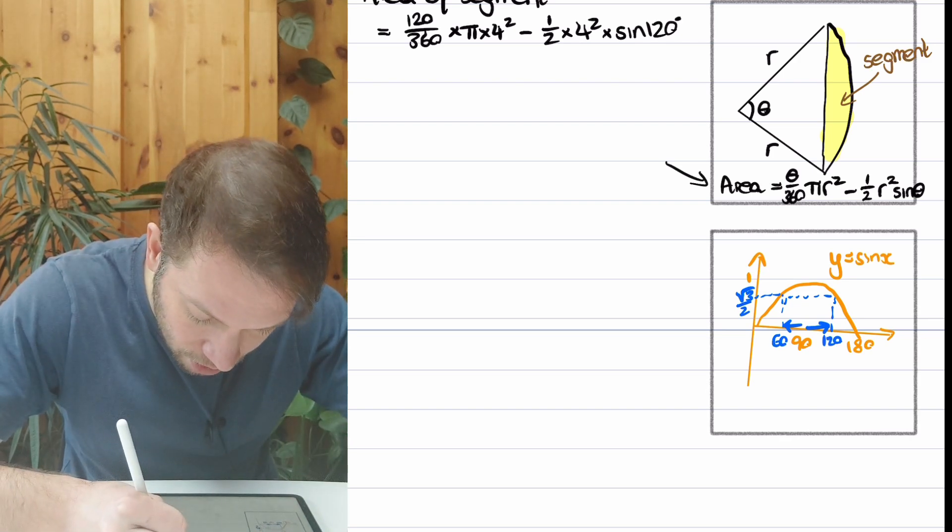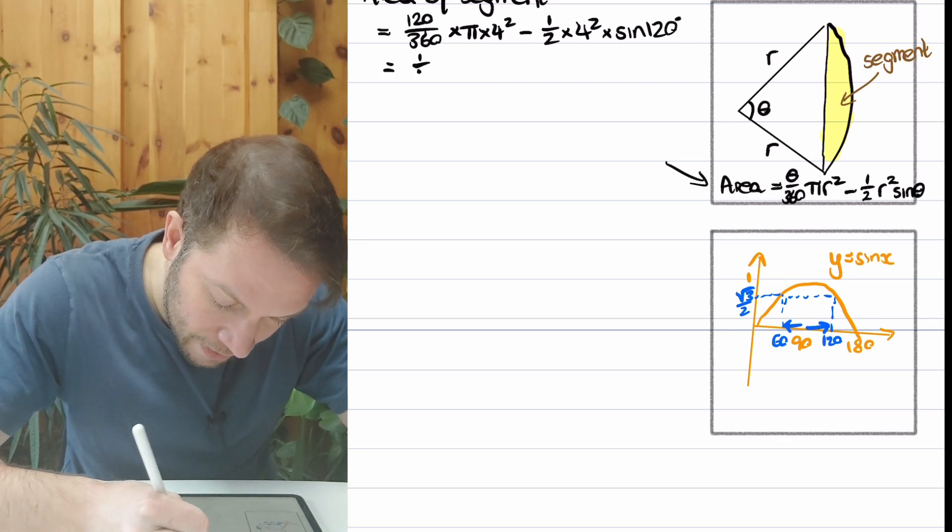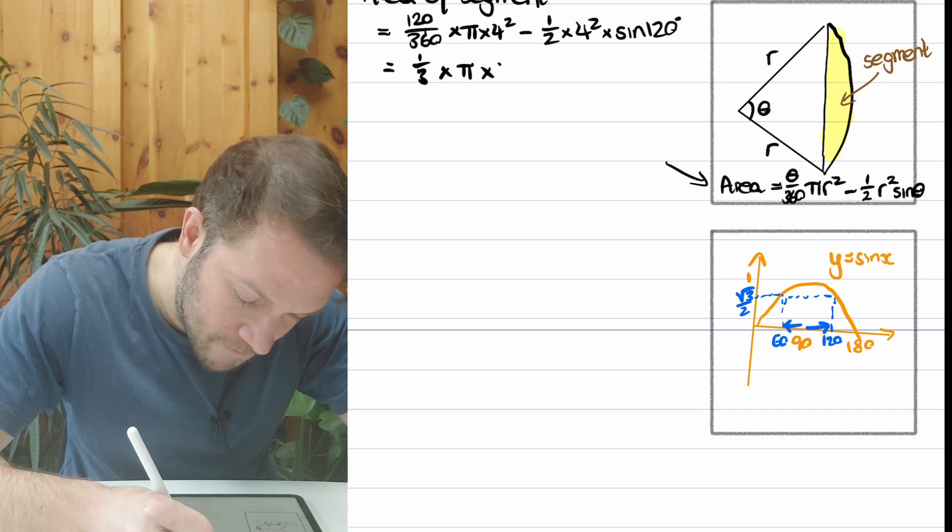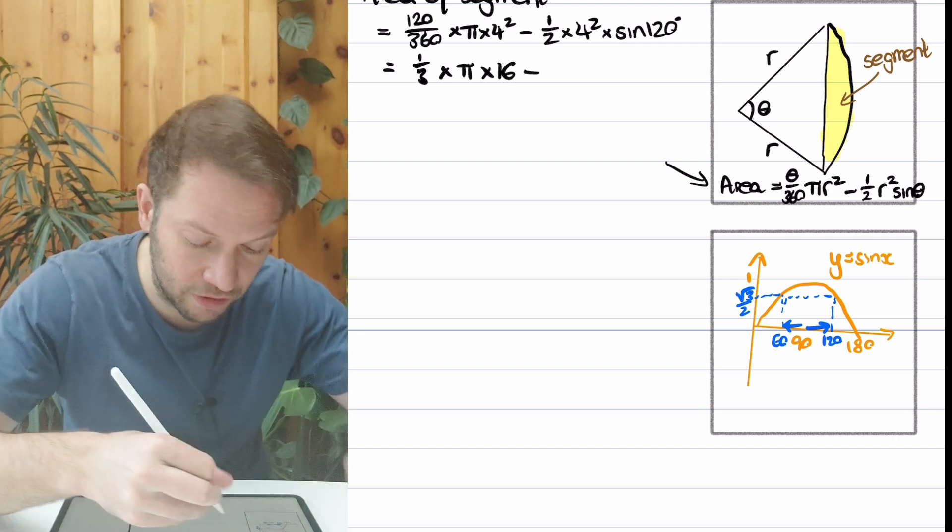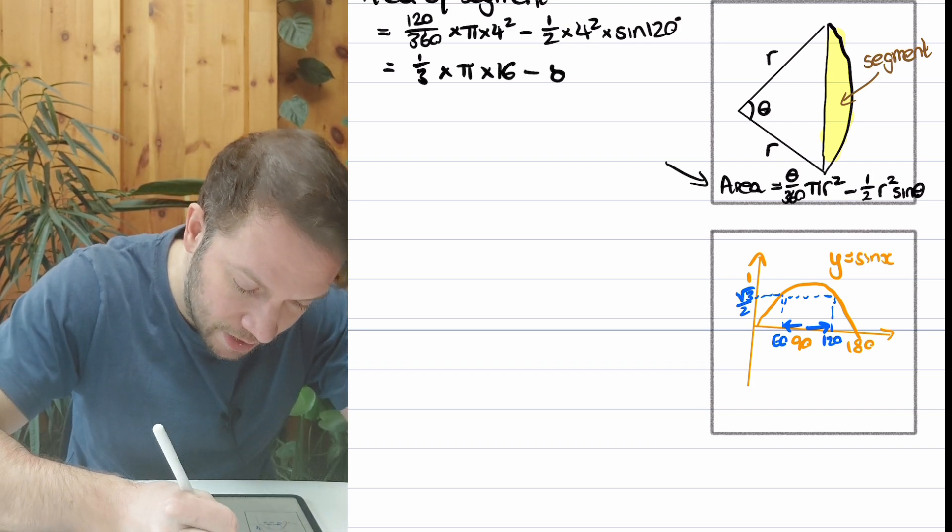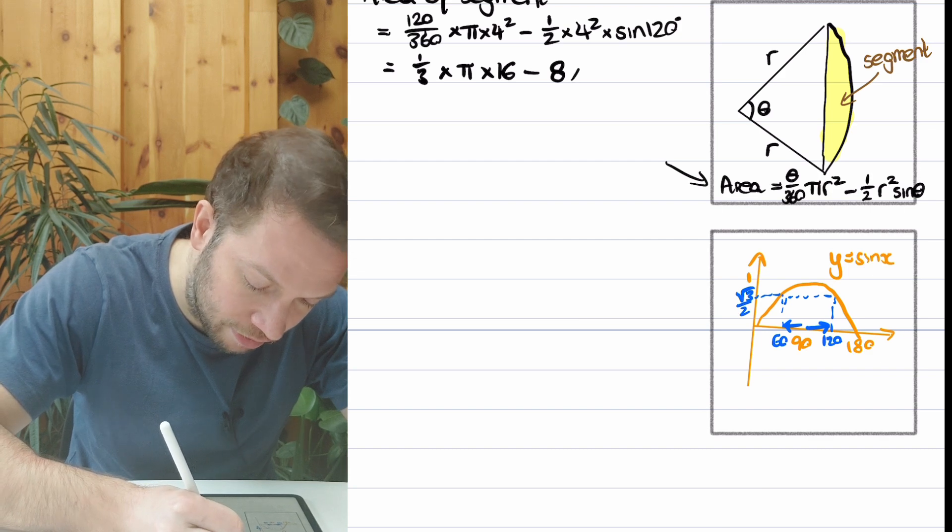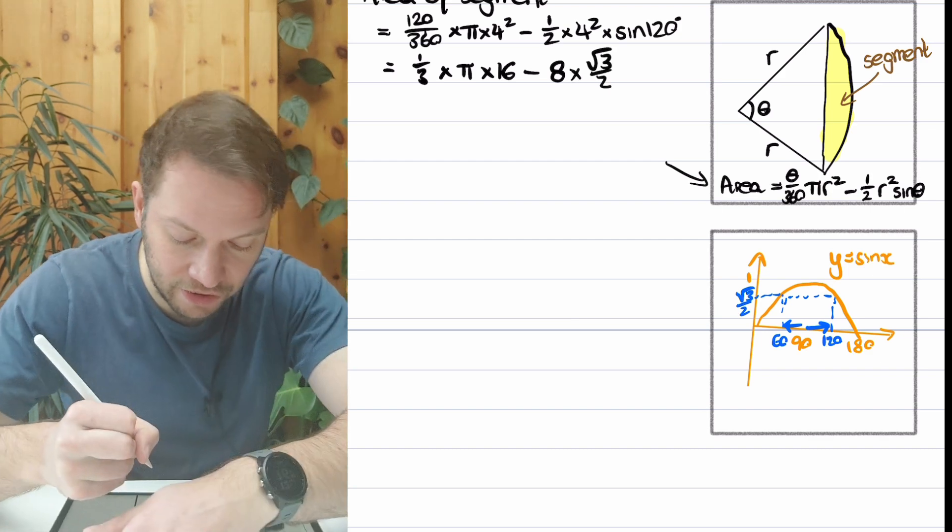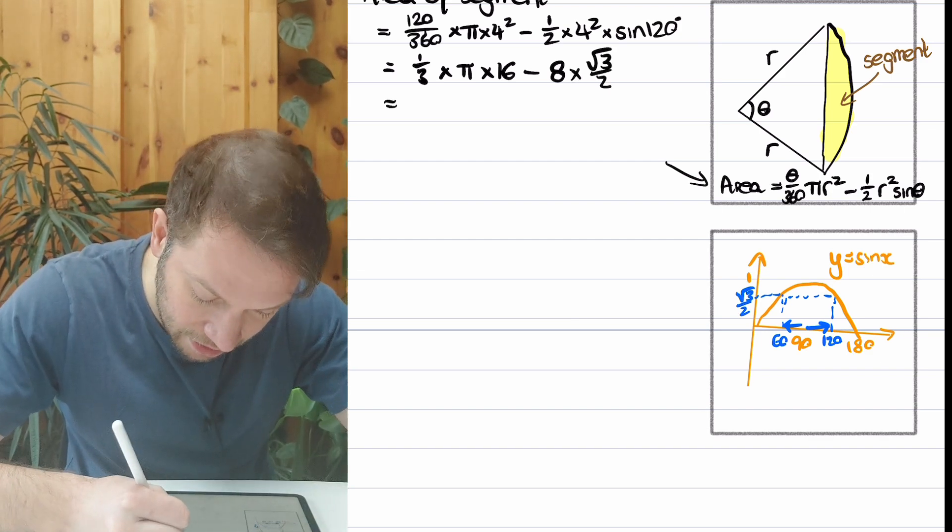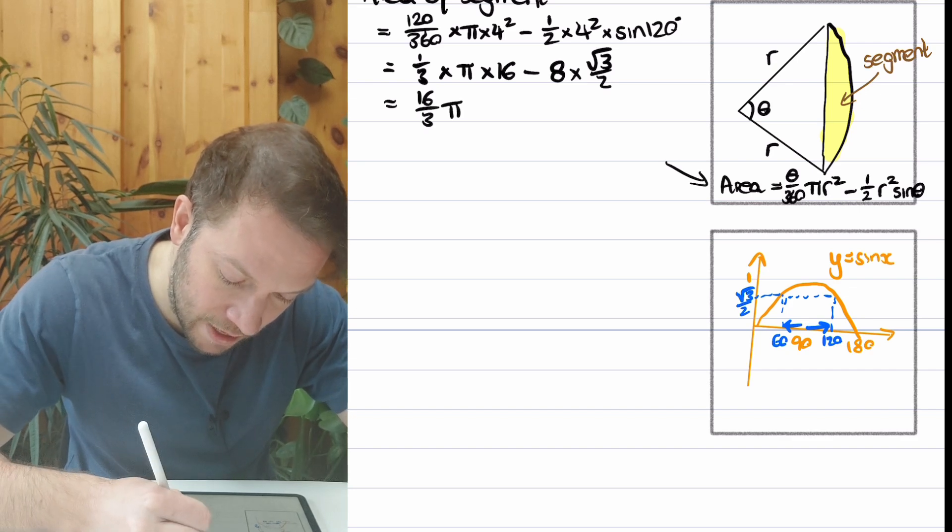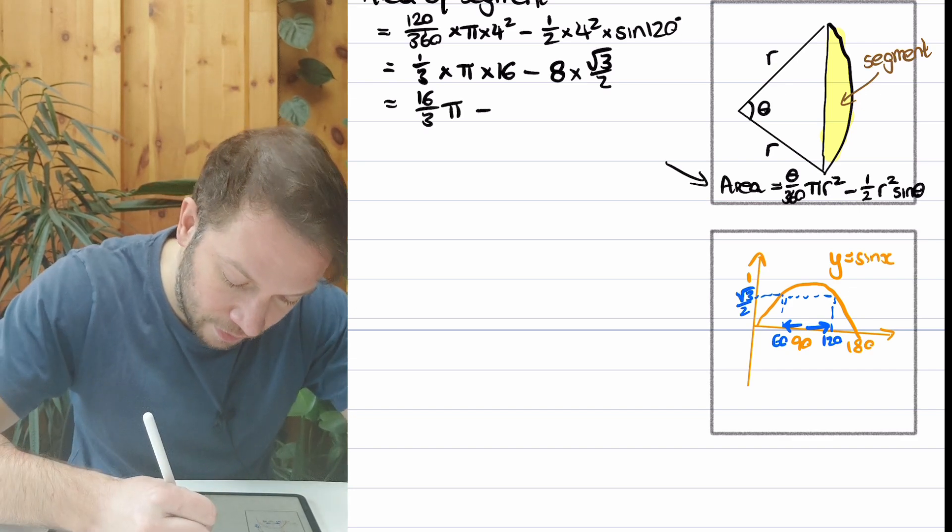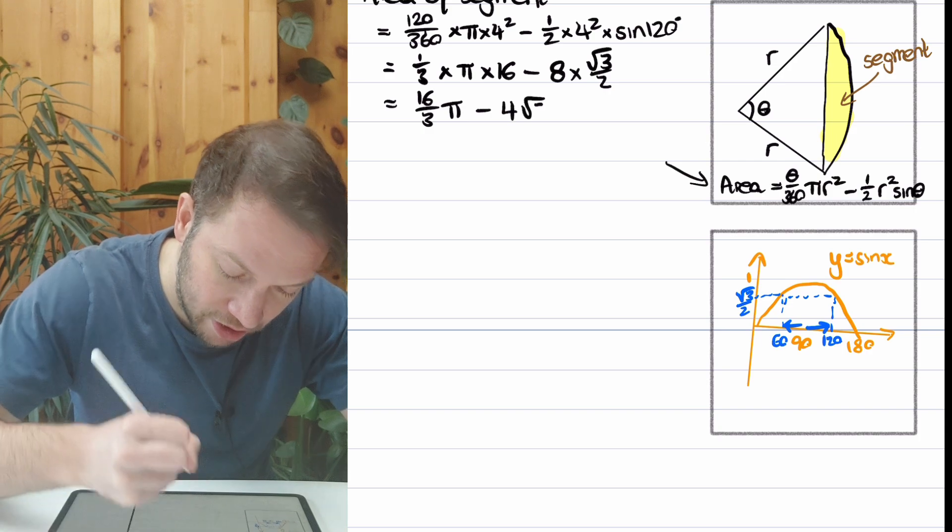So we've got 1/3 times π times 16 minus half times 4² is 8. Sine of 120, we said, was √3/2. Let's just simplify that. 1/3 times 16 is 16/3, and then 8/2 is 4, so we've got 4√3. So we've got the area of the segment, and we're nearly there.